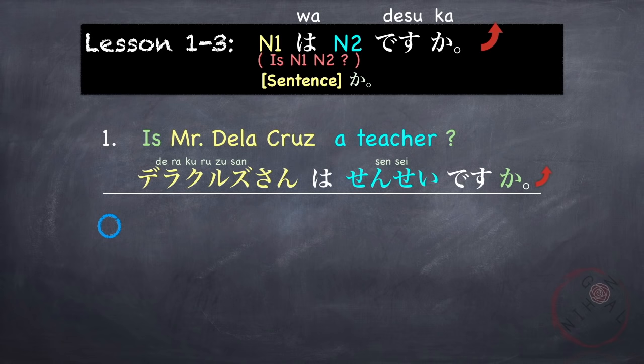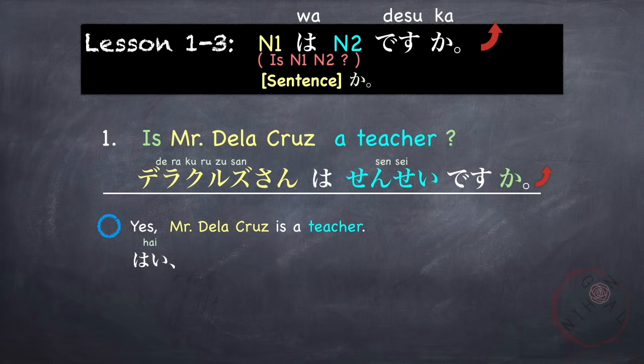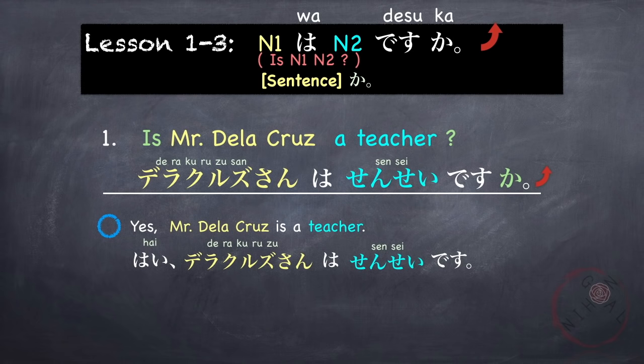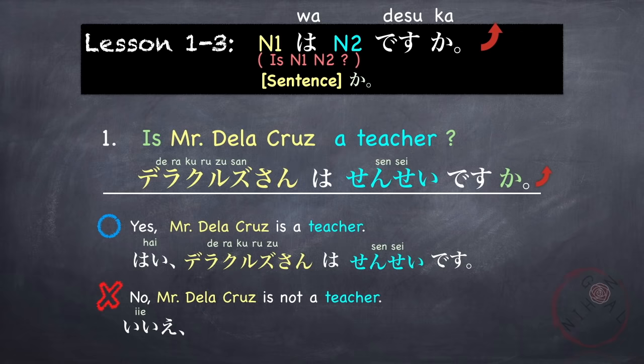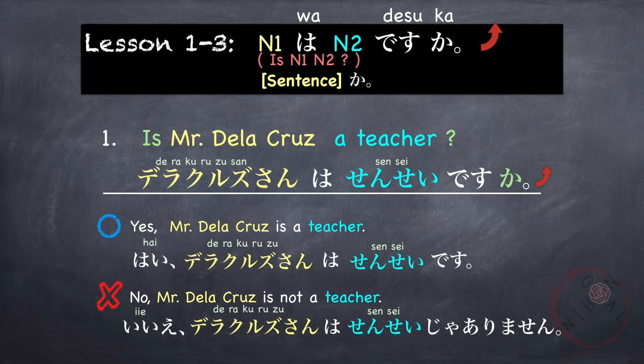How do you answer this question? You answer either yes or no. Yes, Mr. Delacruz is a teacher: Hai, Delacruz san wa sensei desu. If it's no — No, Mr. Delacruz is not a teacher: Iye, Delacruz san wa sensei ja arimasen. So using grammar point number two, we are stating that Mr. Delacruz is not a teacher.